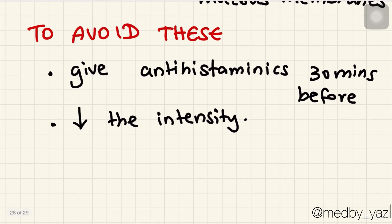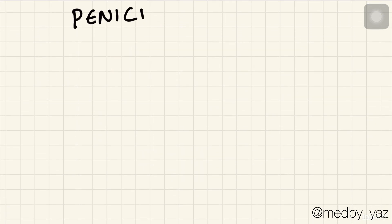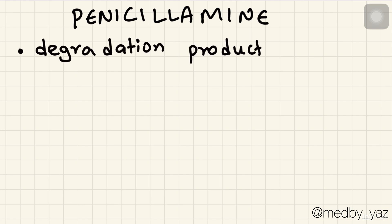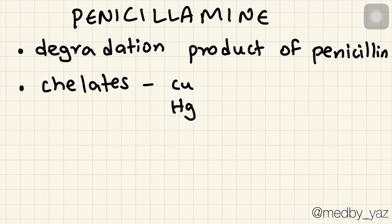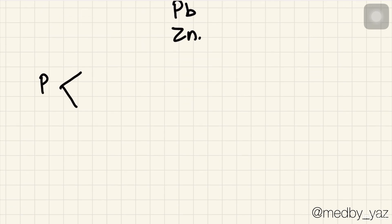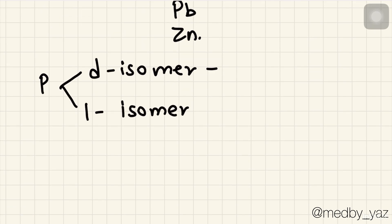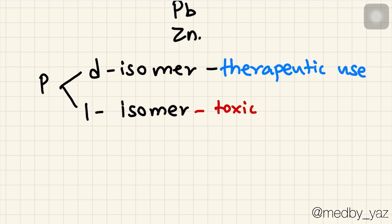Now let's talk about penicillamine. It is a degradation product of penicillin. It chelates copper, mercury, lead, and zinc. It has two isomers — D-isomer and L-isomer. The D-isomer is of therapeutic use, while the L-isomer is never used because it is toxic and causes optic neuritis.